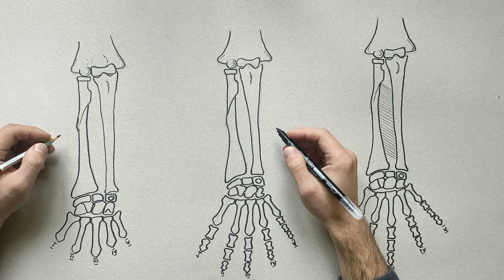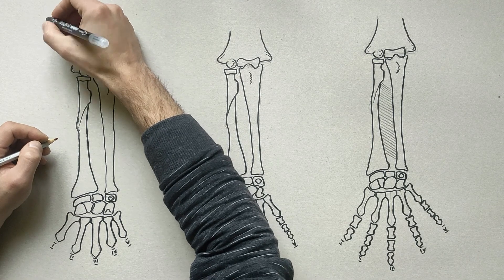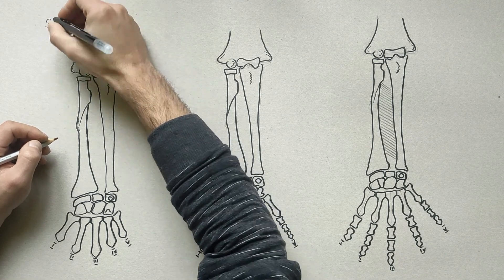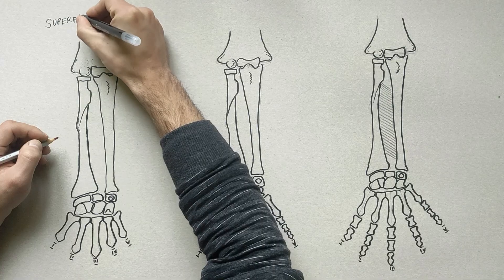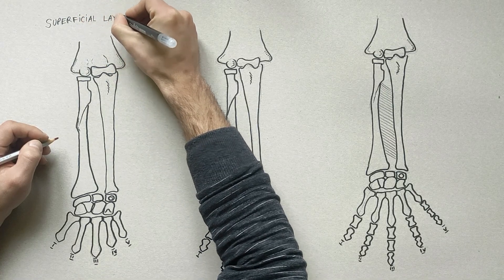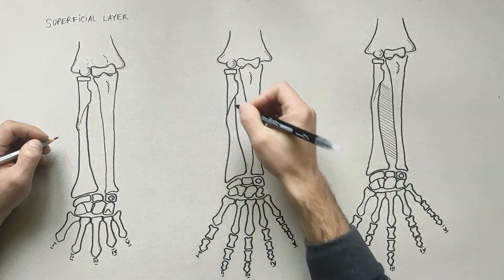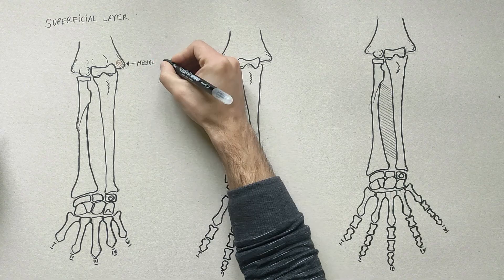There are eight muscles in the anterior compartment of the forearm, arranged in three layers. The superficial layer contains four of these muscles, all of them having a common origin from the front of the medial epicondyle of the humerus.